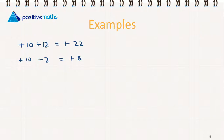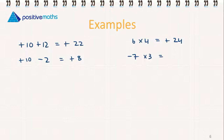Let's try some multiplication. 6 multiplied by 4: same signs means a plus — we multiply to get 24. Minus 7 multiplied by 3: different signs gives us a minus — we multiply the numbers and get minus 21.